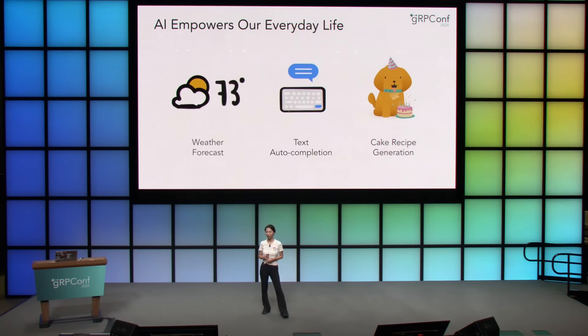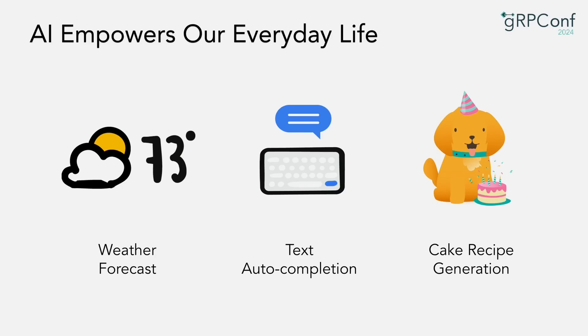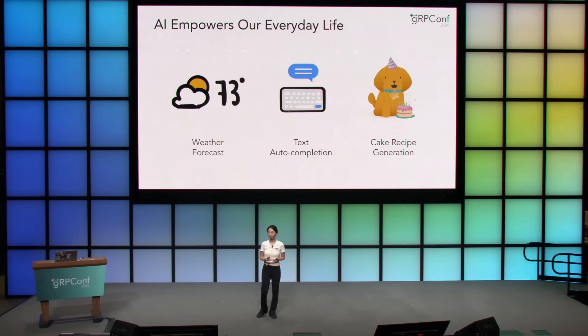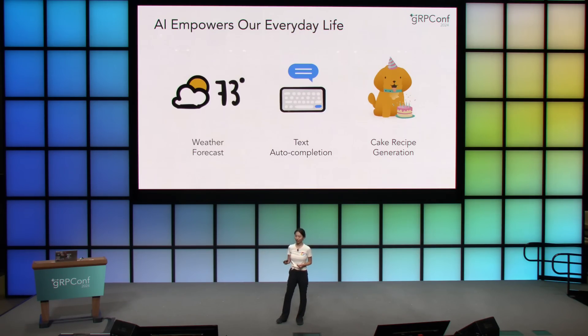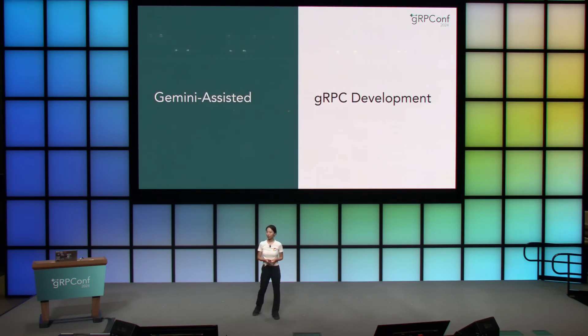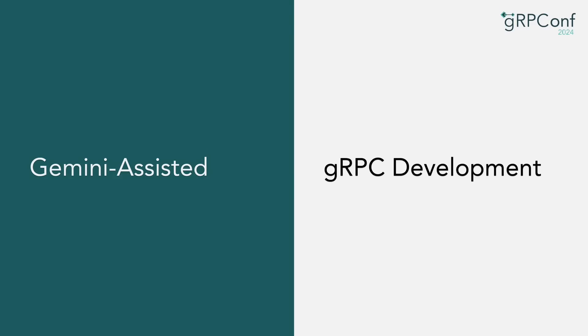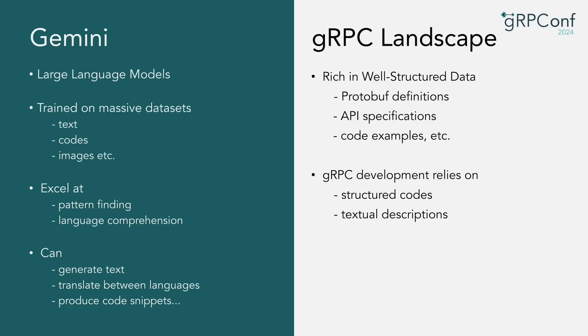Now let's switch gears and talk about how AI can assist gRPC development. How many of you have interacted with AI or used a large language model before? We have almost 80% of the room. AI is already touching every aspect of our lives — from smart speakers giving weather forecasts, to auto-complete on your phone, to asking Gemini for a cake recipe. These are all examples of AI making our lives easier and more efficient. Today we're going to focus on one specific area: the world of gRPC development.